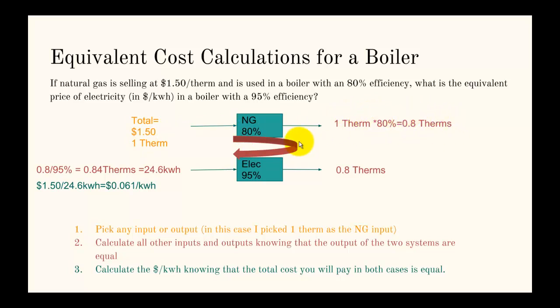We take this one therm and calculate the output of the natural gas boiler. Because we know the efficiency and we know the input, we can calculate it using input times efficiency equals output. So we get 0.8 therms. Since these are serving the same space, it's an equivalent price, we know that the output has to be the same.